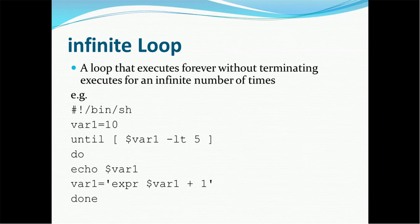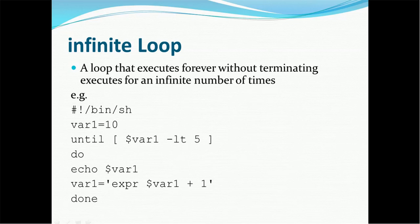A loop executes for an infinite number of times. In this example, we have defined the shebang line, then we defined one variable with value 10, then we are running this using an until condition where variable is less than five. Since the value is 10 but we are comparing less than five, the condition will never satisfy. We echo the variable and increase it by one using an expression, and then done — this is going to continuously run because the condition will not be satisfied.